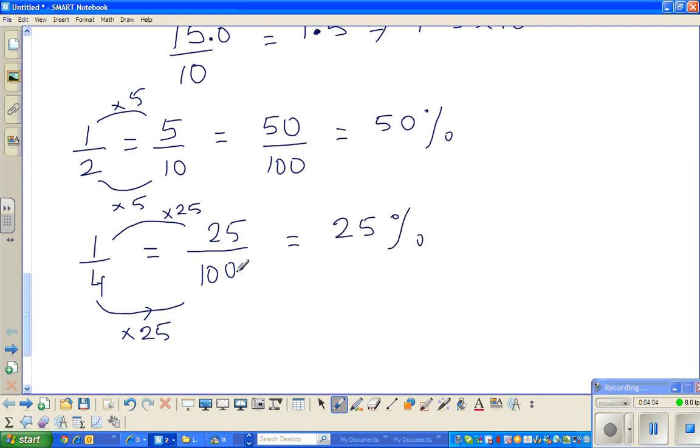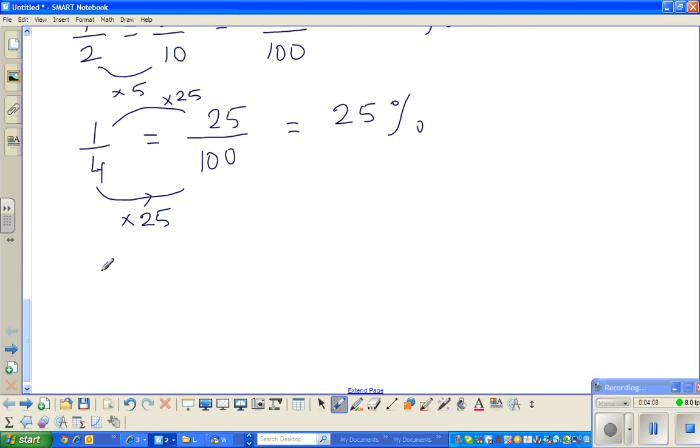These facts are very useful when you're finding percent. If you have 1 fifth, think about it. 1 fifth, can I write as something out of 10? 5 goes in 10 twice, so 5 times 2 is 10. You do the same thing to the top number, times 2, that is 2 out of 10.